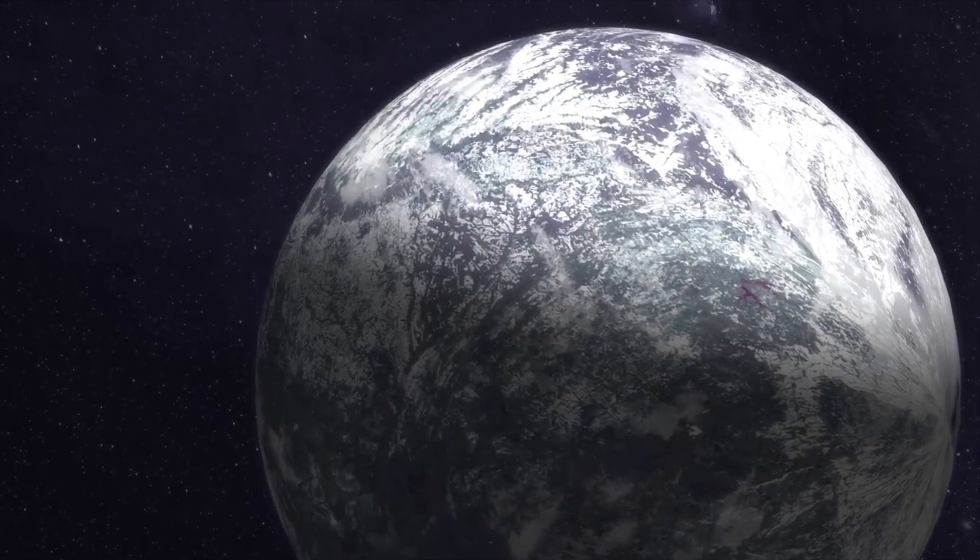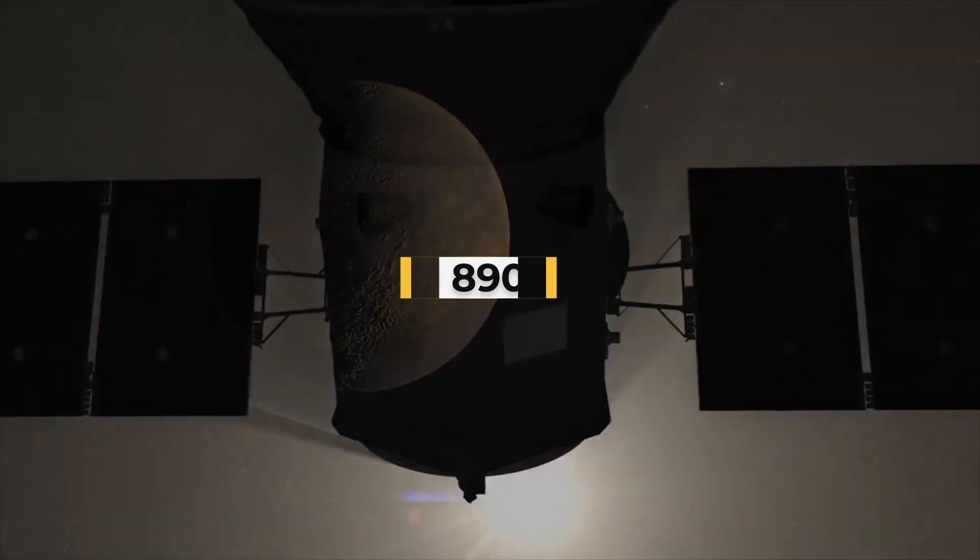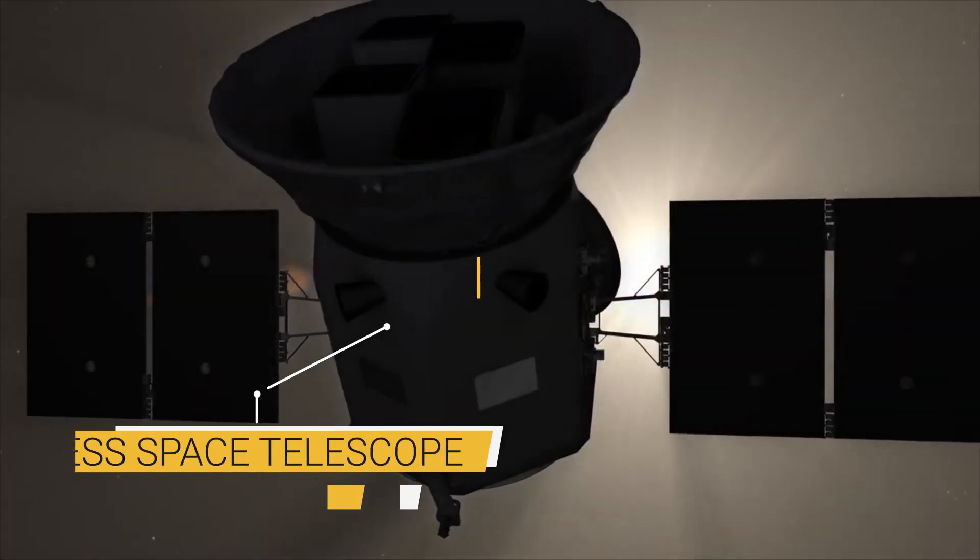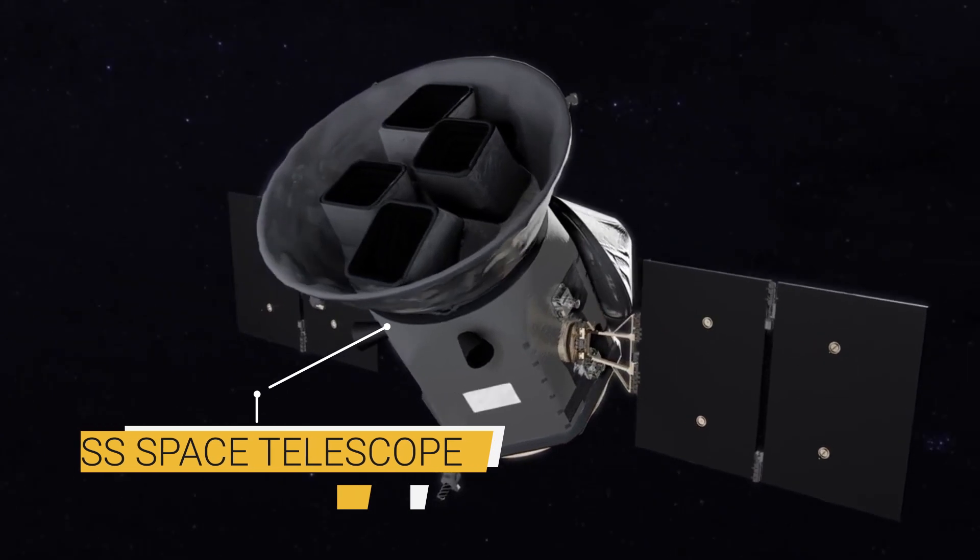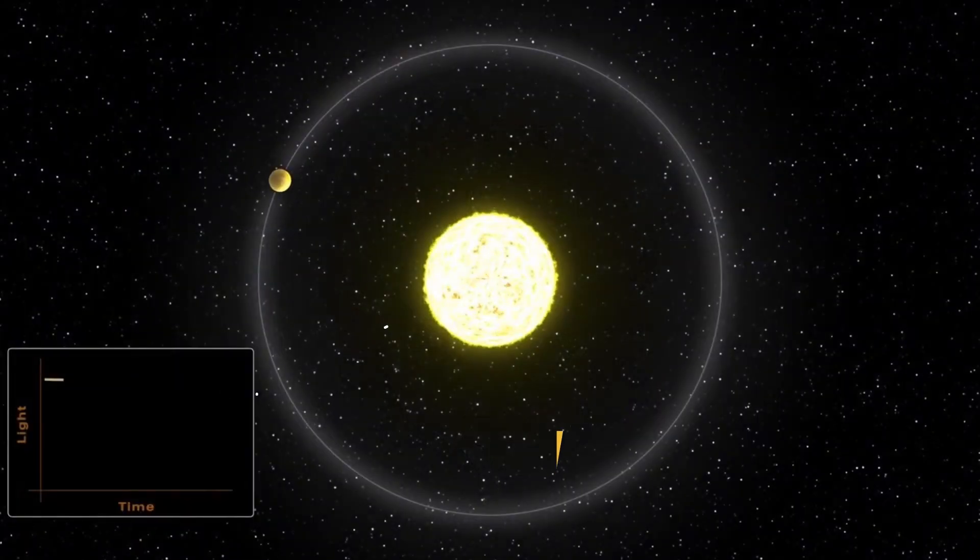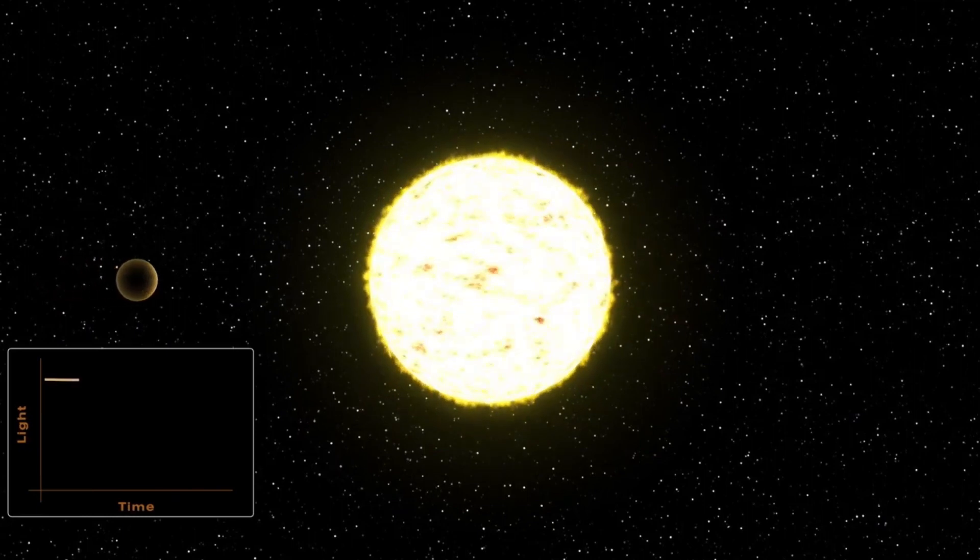Last year, researchers discovered a planet around LP 890-9 with the help of NASA's TESS Space Telescope. The discovery was made using the so-called transit method, in which the telescope monitors the brightness of the star looking for slight dimmings that might be caused by planets passing in front of the star.